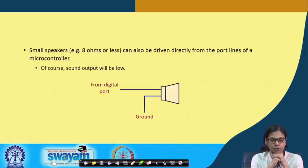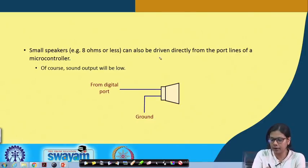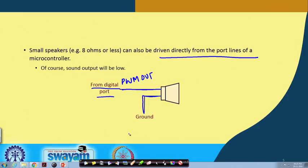We have interfaced a small speaker, in which case we have directly connected it to the port line. It can also be driven directly from the port lines of the microcontroller, but we have to connect to a PWM port line. One end of the speaker is connected to ground and the other end will be connected to the PWM out pin. We will not be able to generate very high-end sound, but a reasonable amount of sound which you can hear can be generated through this PWM port if you directly connect it.